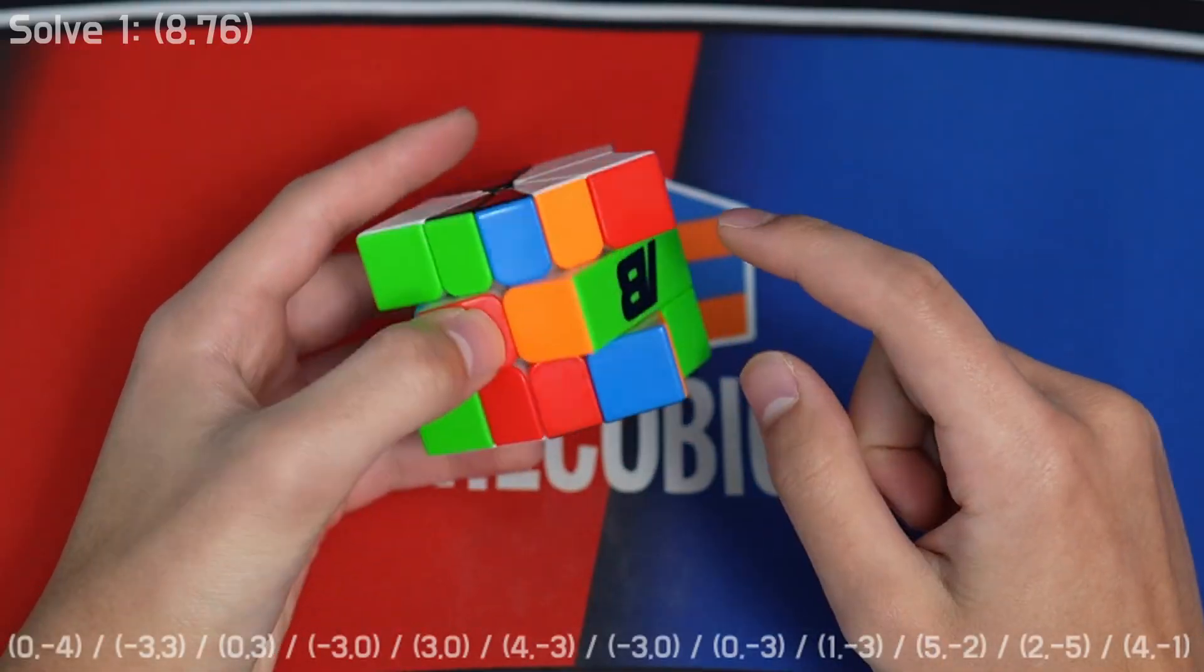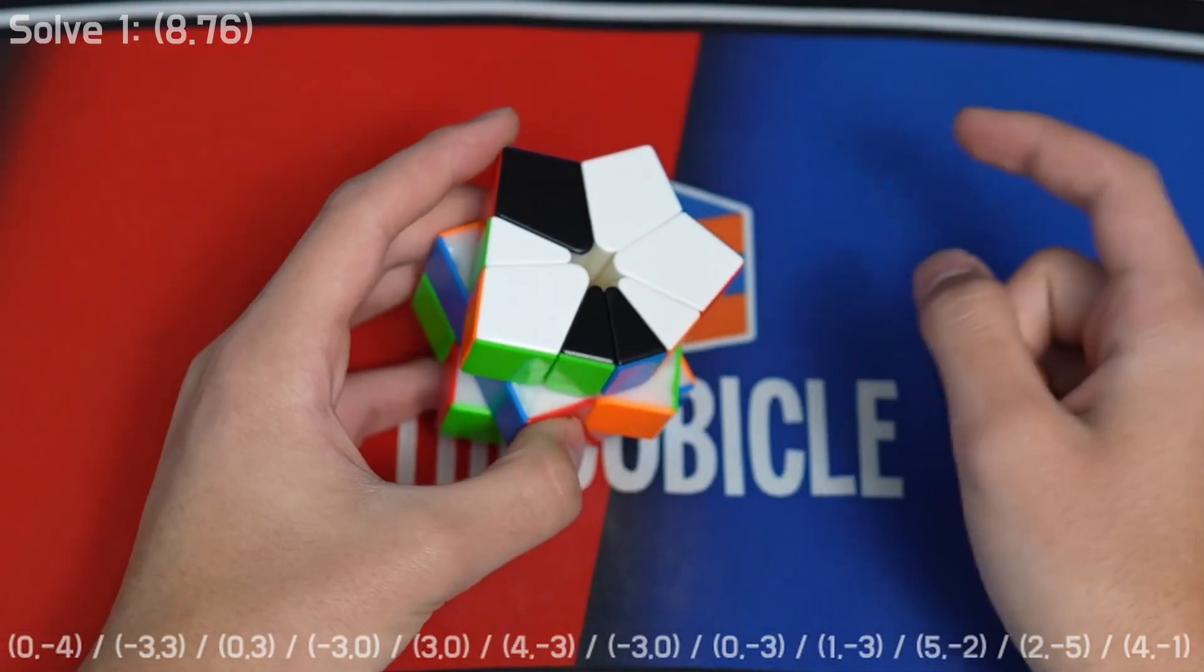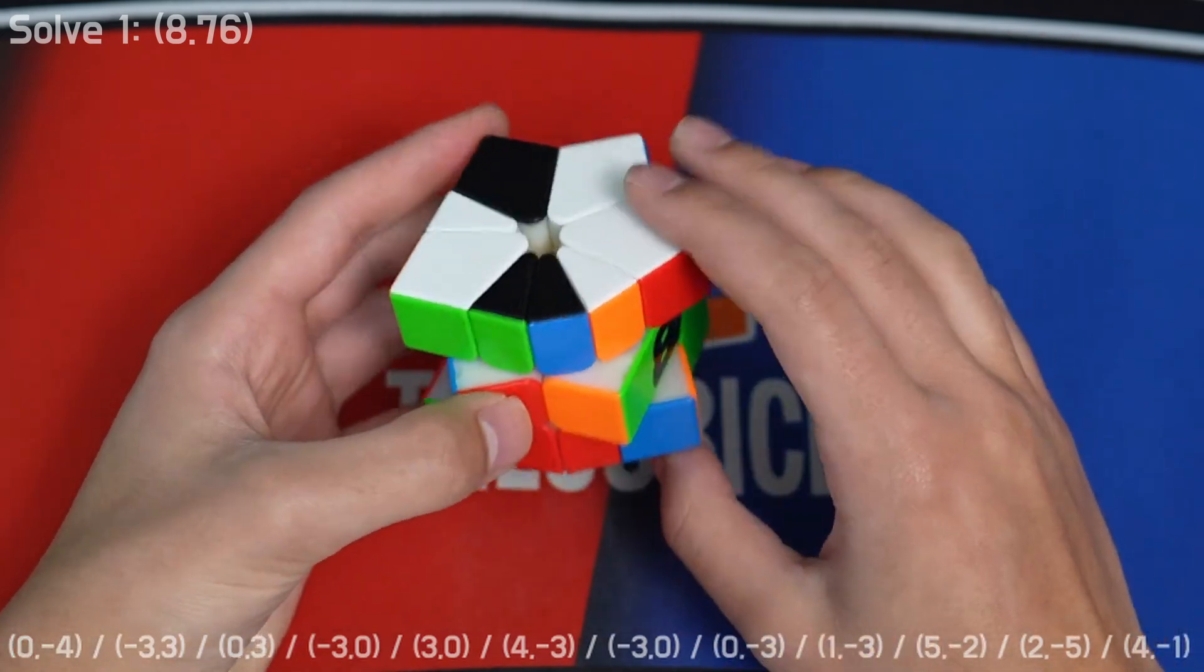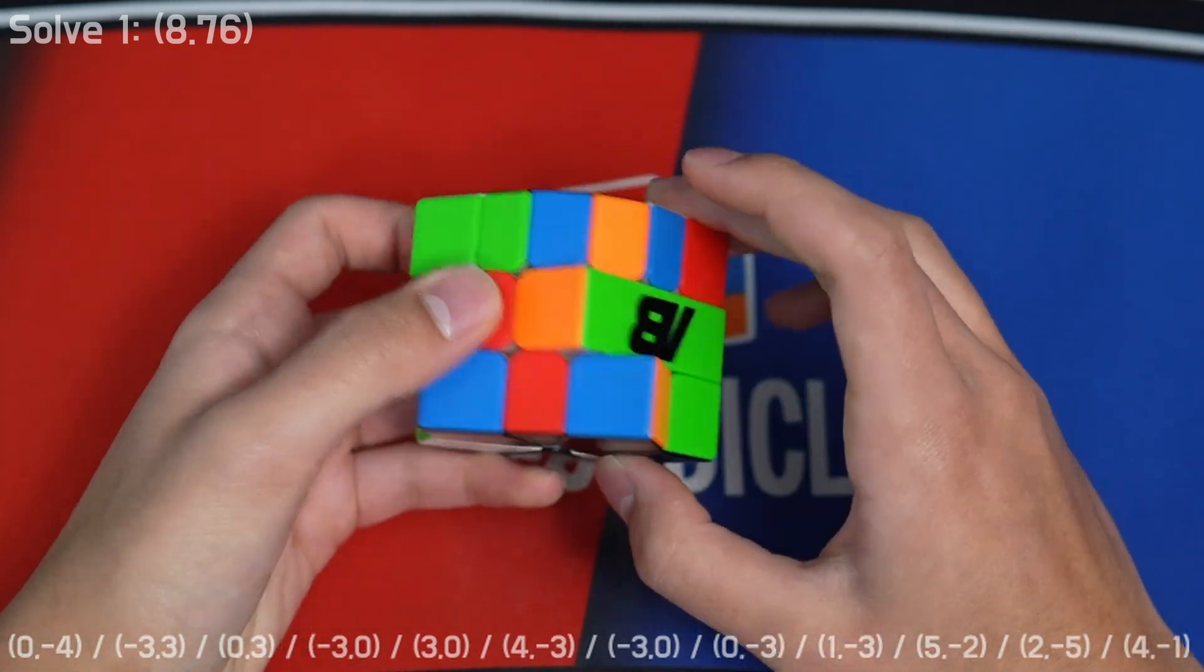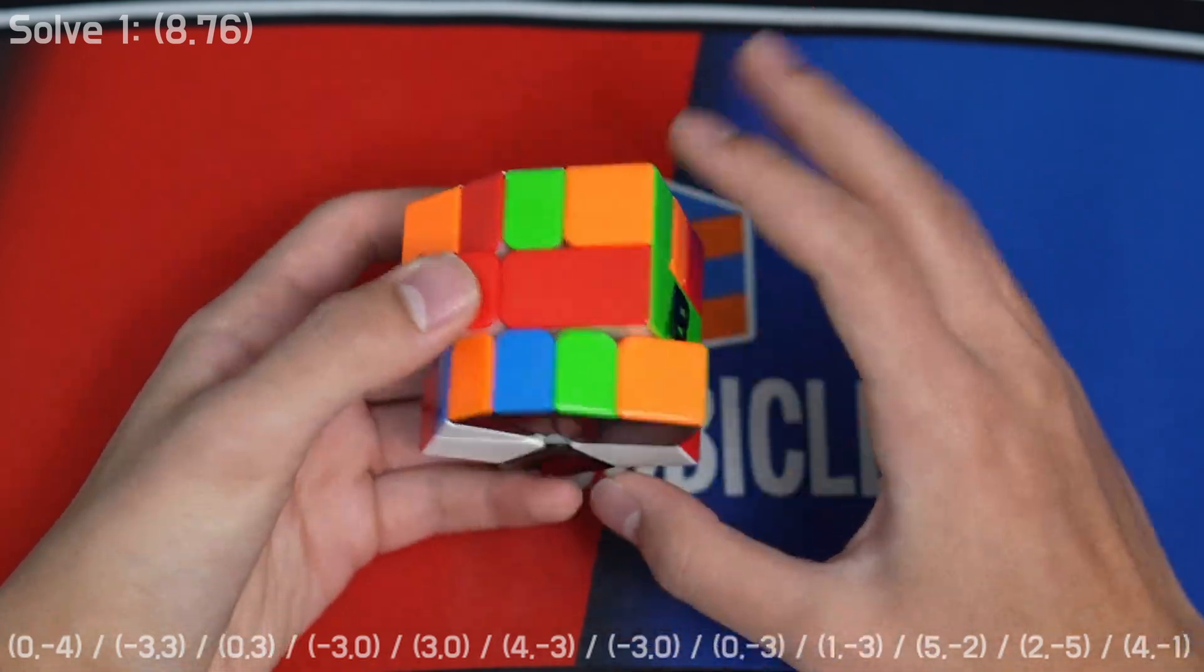All right, first solve was a very lucky 8.76. I had a terrible CSP, this is bad paw barrel. So I put the pair up here, negative one, negative two, negative two, oh, and then re-grip, set up to kite scallop.